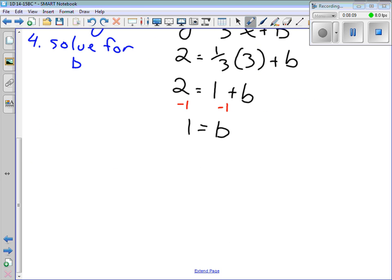So, I'm going to get 1 equals b. And finally, I just put it all together. So, y equals, my slope is 1 third x. My b is 1. And I'm done.